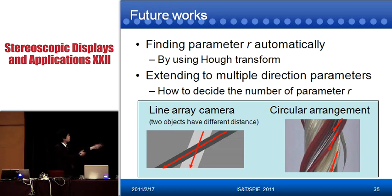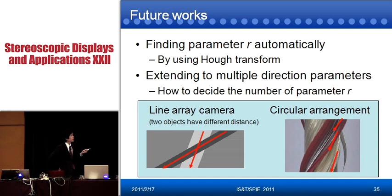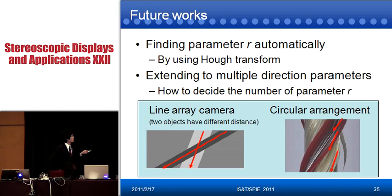For future work, first we have to find the parameter R automatically. In this experiment, we set the parameter R manually, which is very important work. I think by using phase transfer, we can detect the optimum parameter R. Another direction is extending to multiple direction parameters. In the case of circular camera arrangement, the EPI shows a very complex image, so we have to extend to multiple direction parameters. Also, even for linear camera arrays, when two objects have different distances, we need to extend to two parameters.